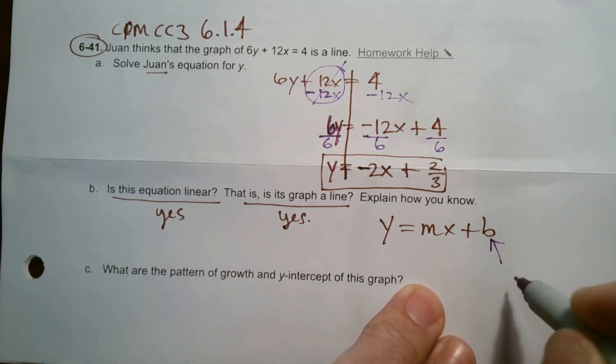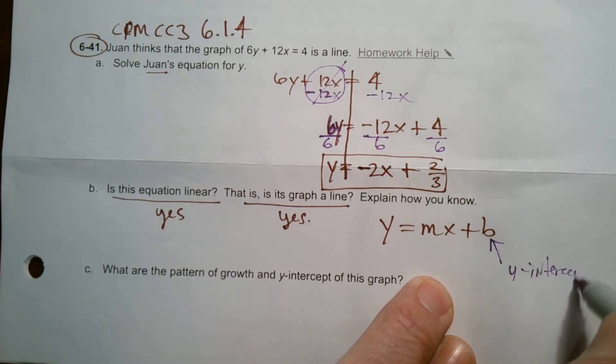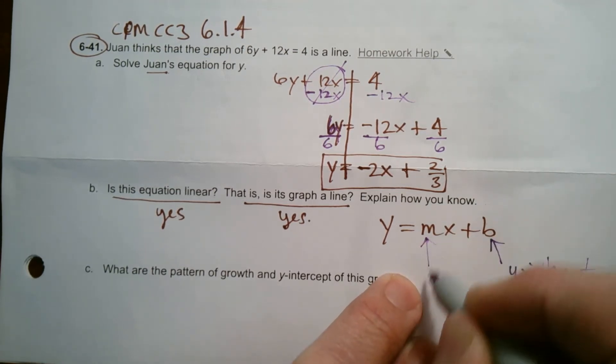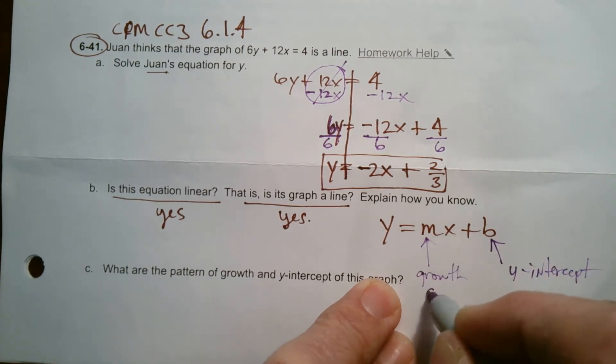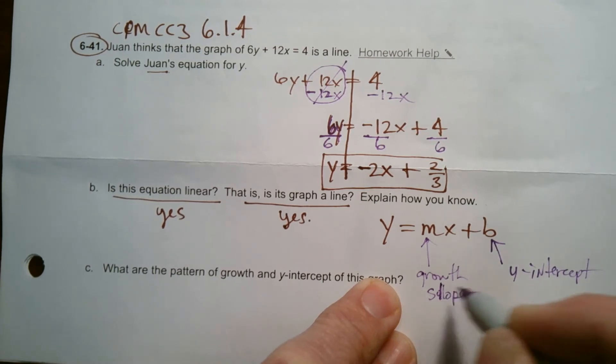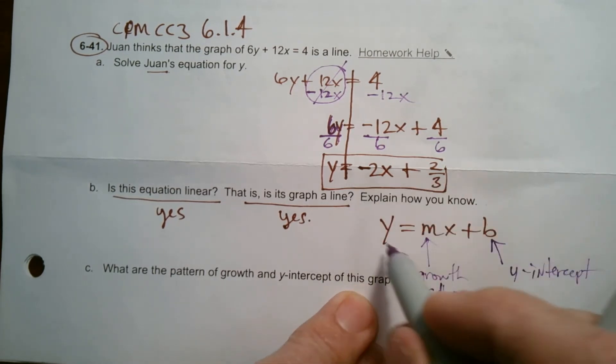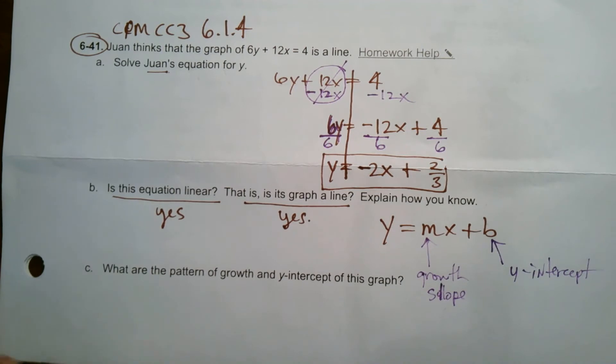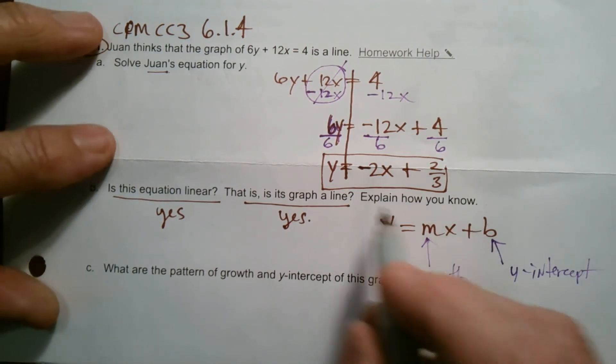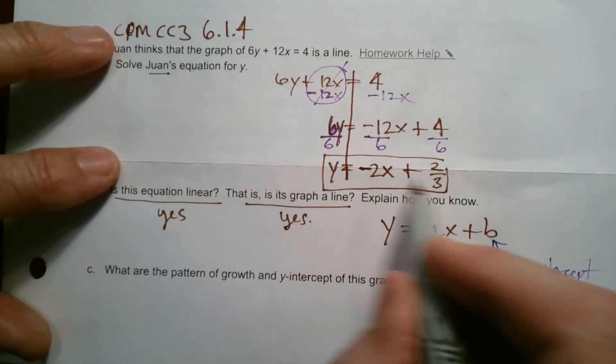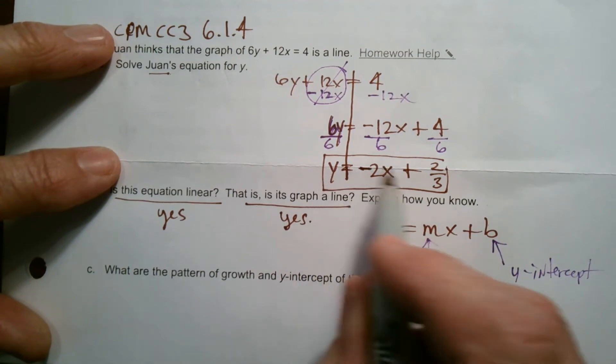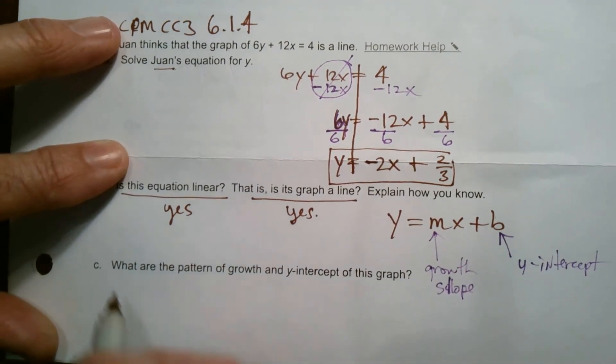Where what's true? b represents the y-intercept. And m represents the growth or the growth rate or the slope. So we know if I have an equation in this form, it's a line. It will be linear. And a line is basically showing all the points, all the coordinates that make this equation true.